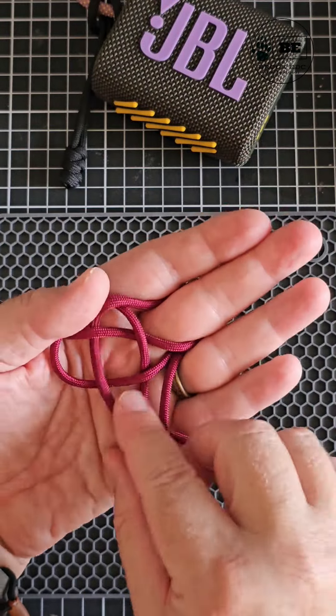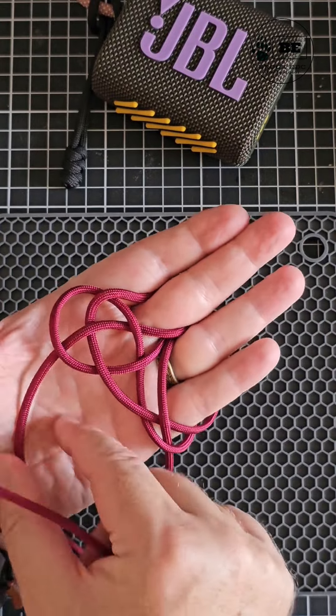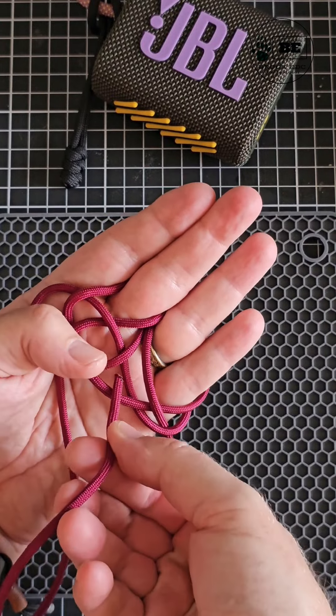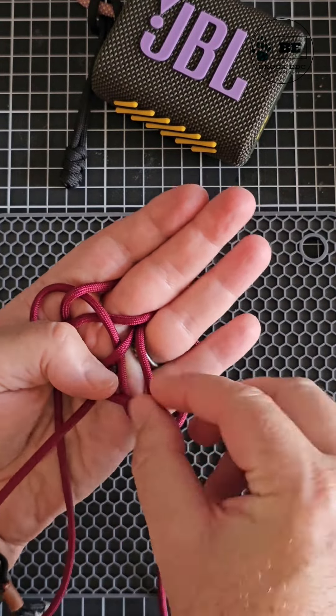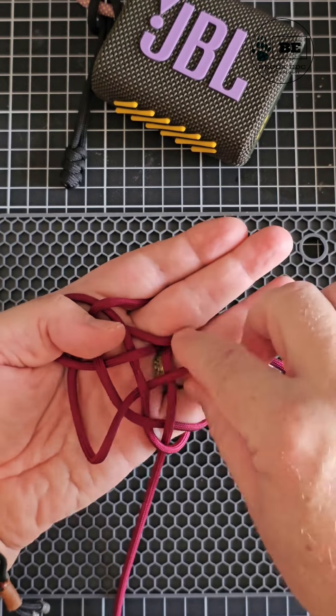And then bring the working end back down the hand towards the center. We're now going to weave back towards our third and fourth finger and you're going to go over the first strand, under the second, pull it through.